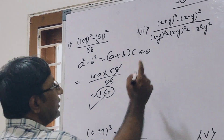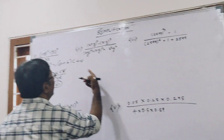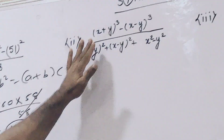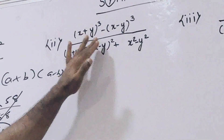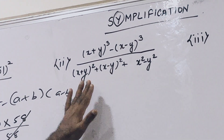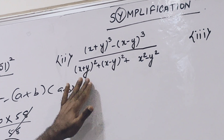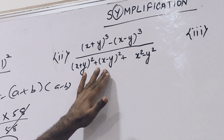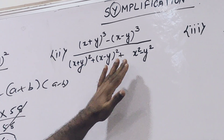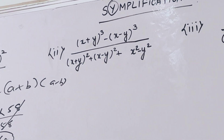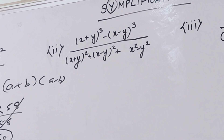In the same way, the second question is: (x+y) whole cube minus (x-y) whole cube, upon (x+y) whole square plus (x-y) whole square plus x squared minus y squared. This is also based on a formula.